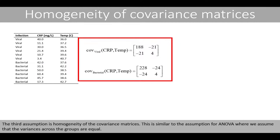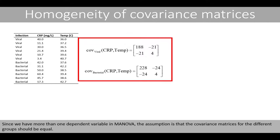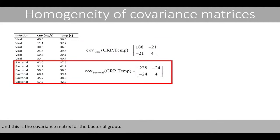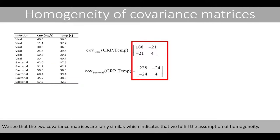The third assumption is homogeneity of the covariance matrices. This is similar to the assumption for ANOVA, where we assume that the variances across the groups are equal. Since we have more than one dependent variable in MANOVA, the assumption is that the covariance matrices for the different groups should be equal. This is the computed covariance matrix for the viral group, and this is the covariance matrix for the bacterial group. The two covariance matrices are fairly similar, which indicates that we fulfill the assumption of homogeneity.